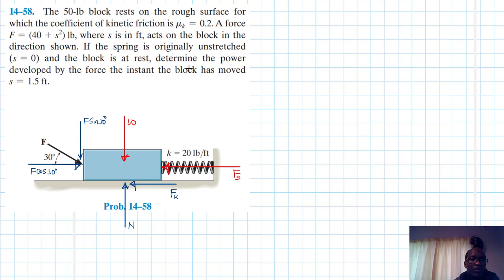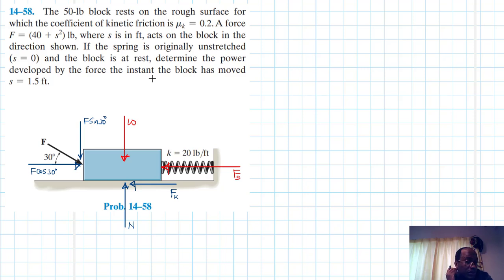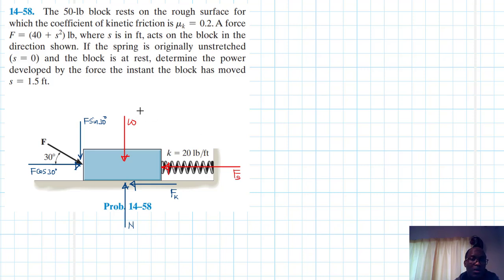We have been asked to determine the power developed by the force the instant the block has moved 1.5 feet. To find power, we need to find the velocity when s = 1.5 feet. To find the velocity, we need to find the acceleration in terms of s, and then integrate using the kinematic equations.